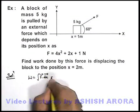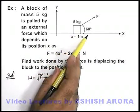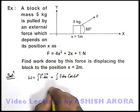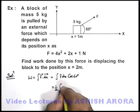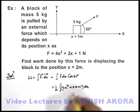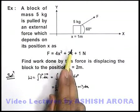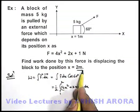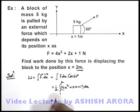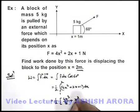The integration of F·dx can be further written as F·dx·cos(60°), because the body is displaced along the x-axis while the force acts at an angle of 60°. So this becomes one-half times the integration of F·dx, where F is written as 4x² + 2x + 1, into dx, with limits from x equal to 1 to x equal to 2. Integrating: one-half times — integration of 4x² gives 4x³/3, plus integration of 2x gives x², plus x — with limits from 1 to 2.